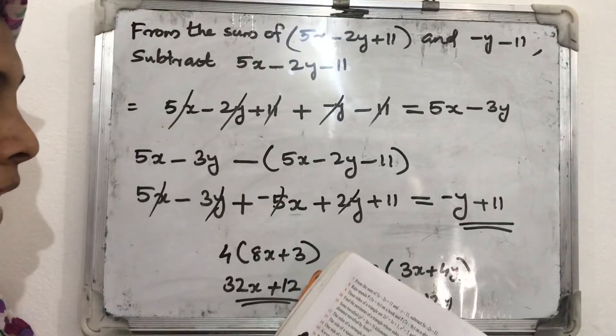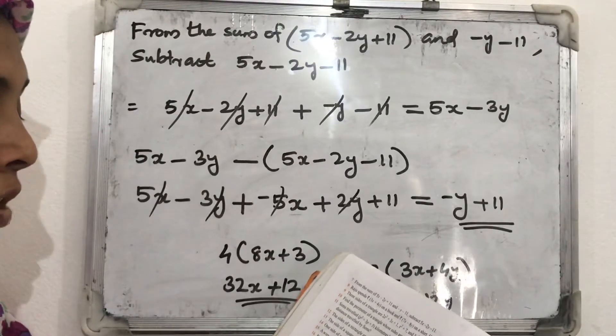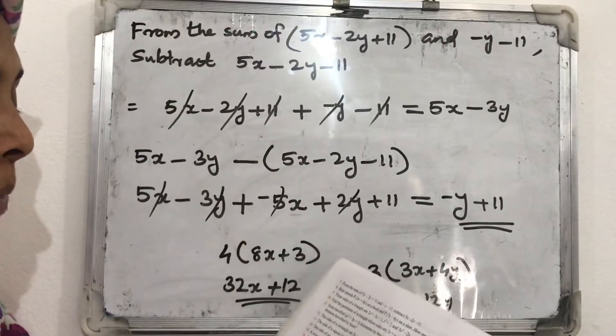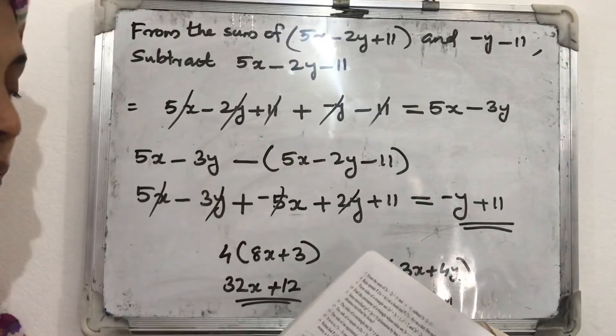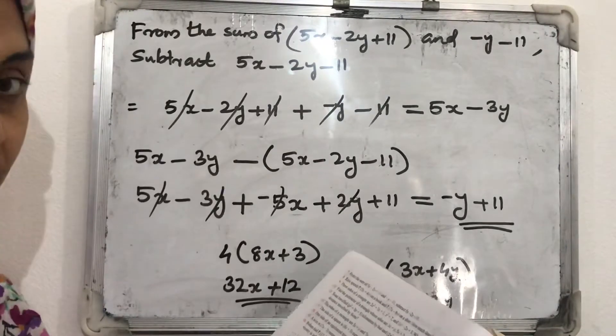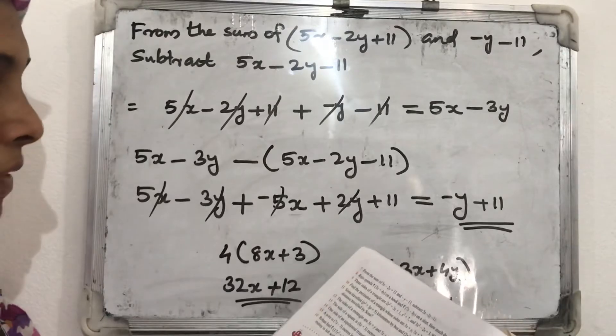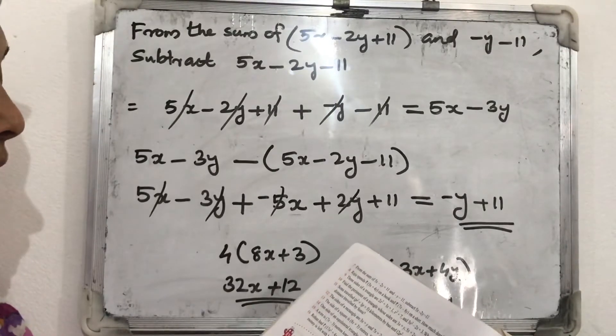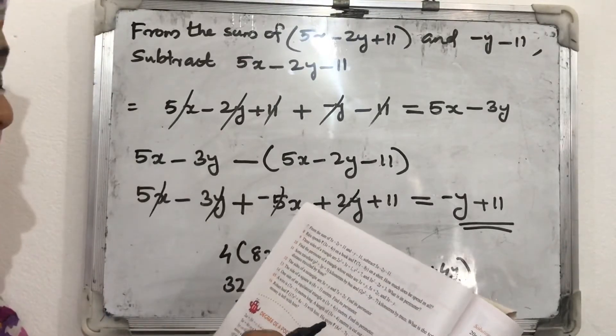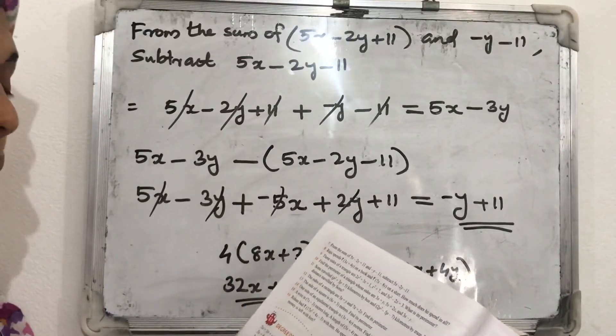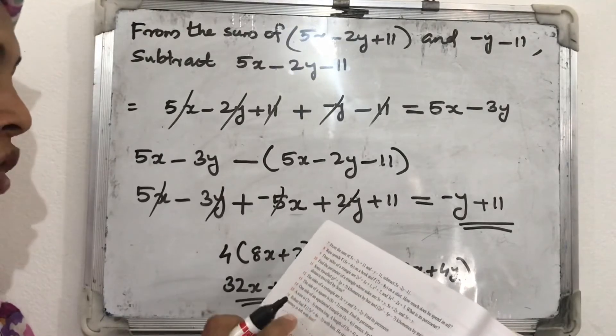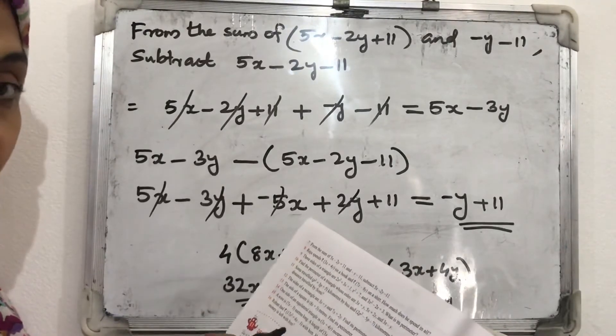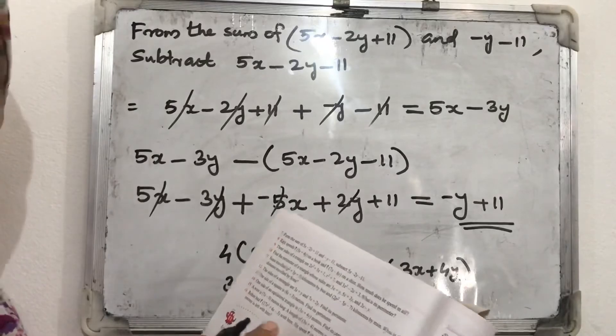Next, 15th one. A wire is 7x minus 3 meters long. A length of 3x plus 4 meters is cut out of it. How much wire is left? There will be subtraction. Very easy. Rohan had 17x square plus 4x minus 3 with him. He spent 8x square minus 7x minus 3 for his birthday party. How much money is left with him? For that we want to subtract those two expressions.